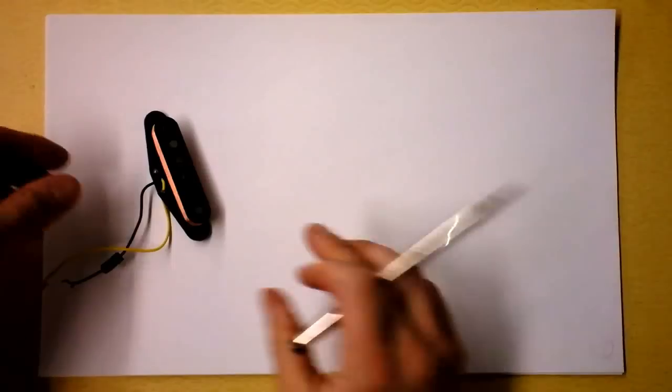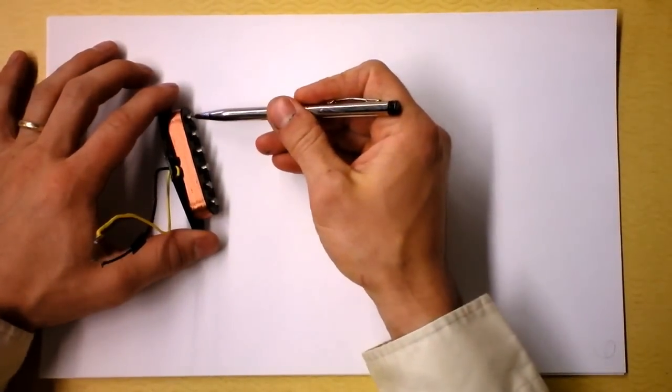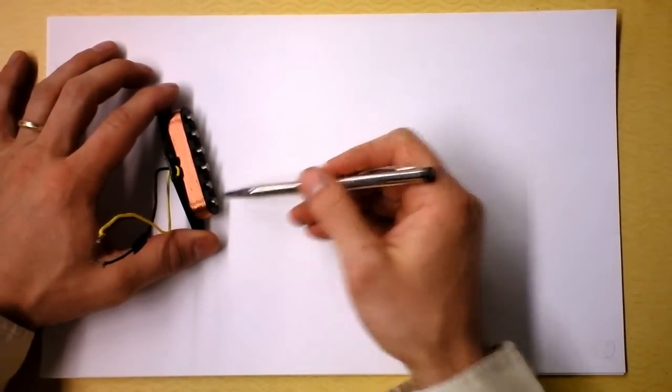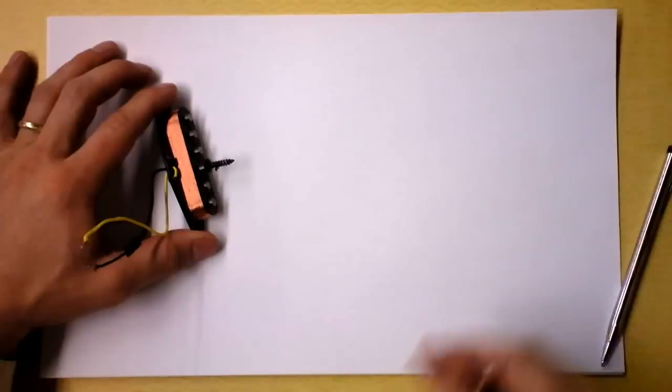Rock and roll! This is a pickup coil from an electric guitar. And I hope that you can see that there are one, two, three, four, five, six magnets right here. Let's prove that they're magnets. Yep, stuff sticks to them.